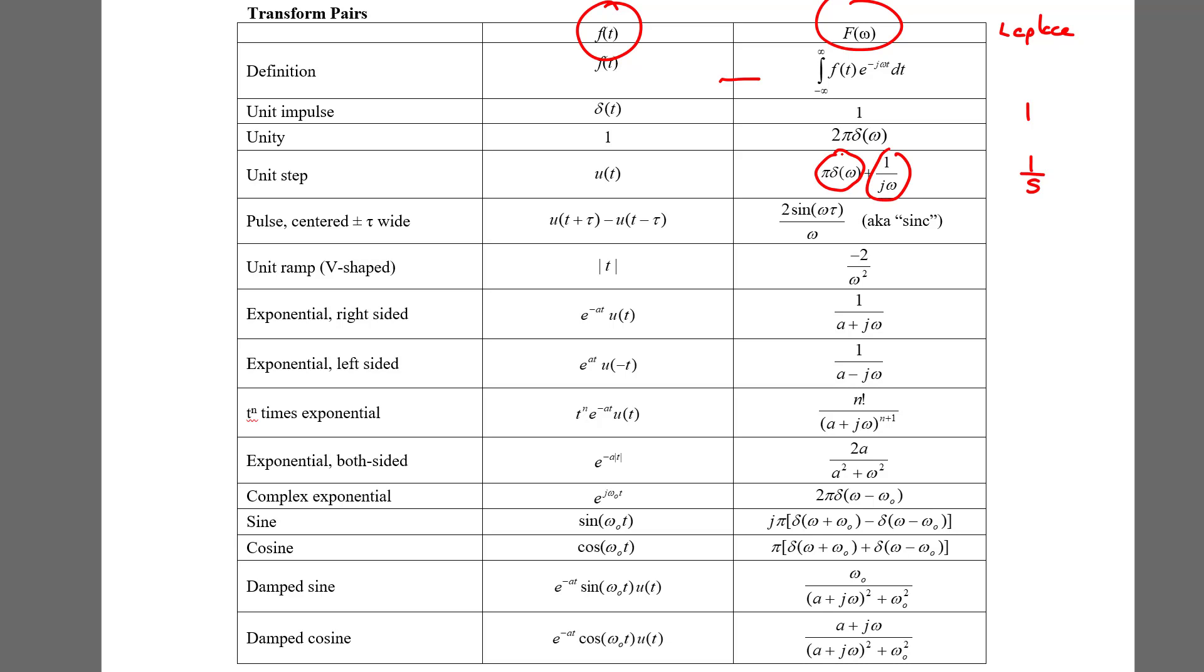This is the one exception to the rule I gave earlier. That the Fourier transform of a right-sided signal, in other words a signal that's zero to the left of the origin, is the same as the Laplace transform just with s replaced by j omega.